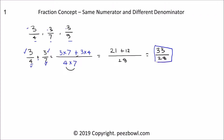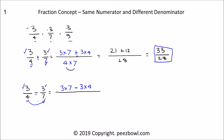So this is the result when we are adding 3 upon 4 and 3 upon 7. Now I will subtract the same fractions. 3 upon 4 minus 3 upon 7 — we are going to follow the same rule. We need to multiply the first fraction's numerator with the second fraction's denominator: 3 multiplied by 7. Then we have a minus sign. Then we multiply the second fraction's numerator with the first fraction's denominator, that is 4 — so 3 multiplied by 4. And at the denominator place, we multiply both fractions' denominators: 4 multiplied by 7.